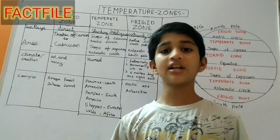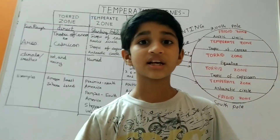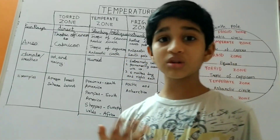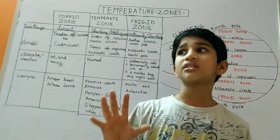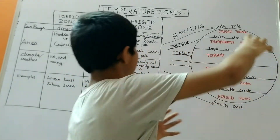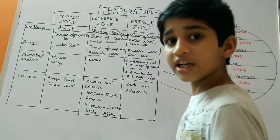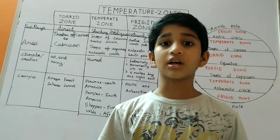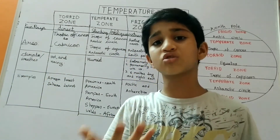Here is a fact file. Do you know why the polar regions get snowfall for such a long period of time? That is because at the North Pole and South Pole, we get extremely slanting rays from the sun, so it is very cold. Also, another reason is humidity — a lot of humidity can cause snowfall.